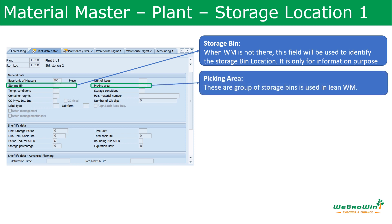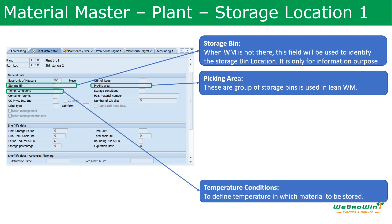The Picking Area field represents a group of WM storage bins used for picking in lean warehouse management — this is used when there is integration with lean warehouse management. Temperature Conditions is simply the temperature at which the material should be stored, because certain chemicals, food products, or materials have to be kept at low temperature. Temperature conditions can be configured through a configuration path, and then those details can be used to update the parameters.